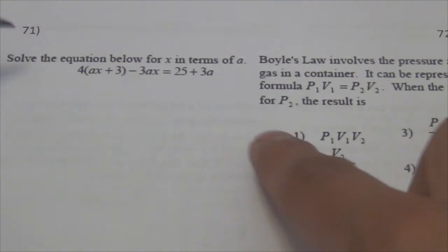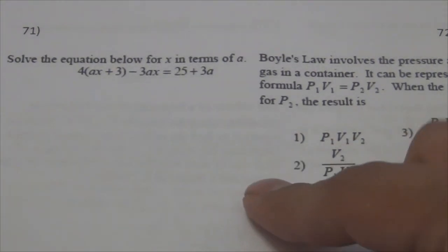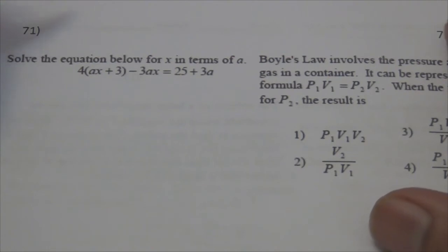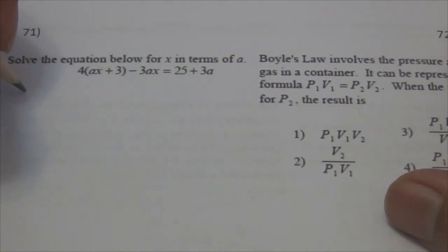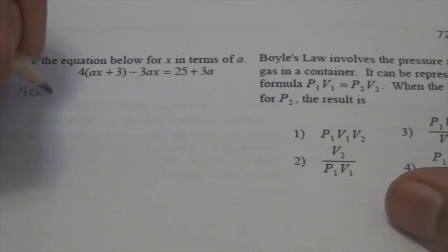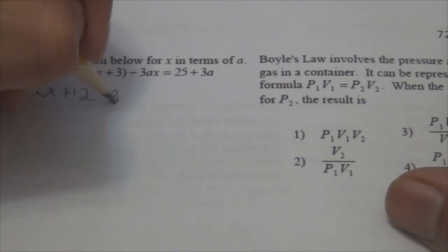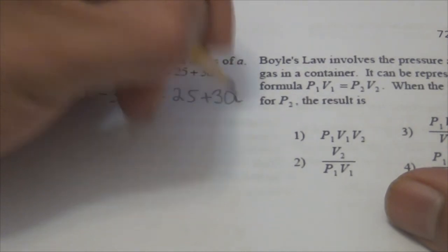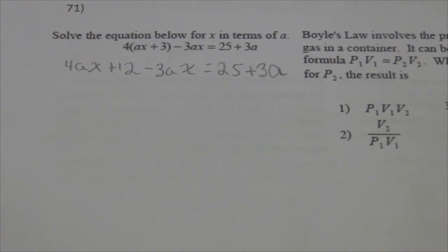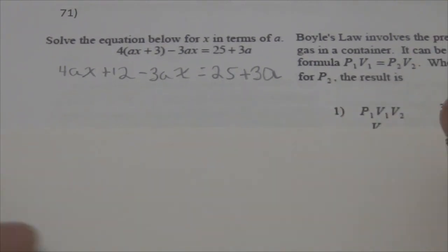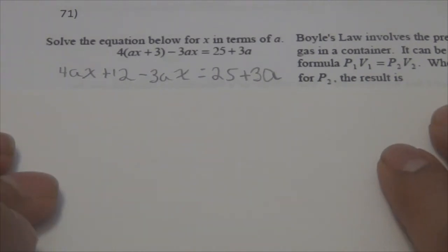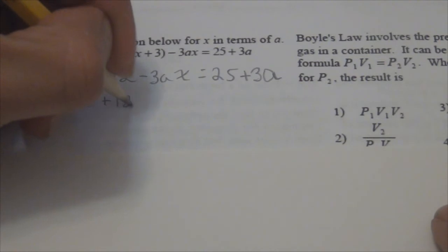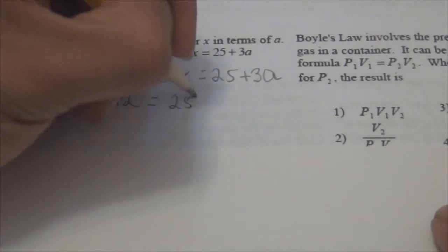Problem 71: Solve the equation for X in terms of A. First, use the distributive property to get 4AX plus 12 minus 3AX equals 25 plus 3A. Then combine like terms: 4AX minus 3AX is 1AX, so AX plus 12 equals 25 plus 3A.